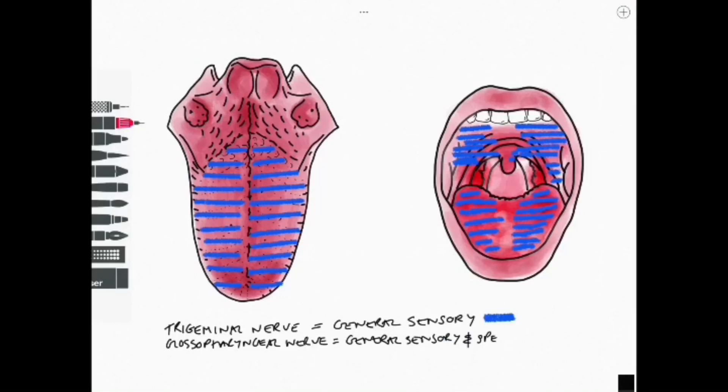The glossopharyngeal nerve is general sensory and special sensory. So if we look first of all at the tongue we'll notice that its coverage in yellow here is on the posterior one third. That is general sensory and special sensory to that region. It is general sensory only to a portion of the oral cavity seen in yellow here.